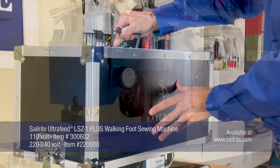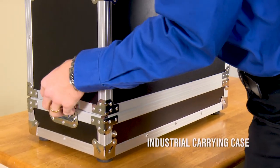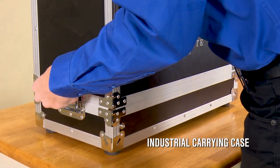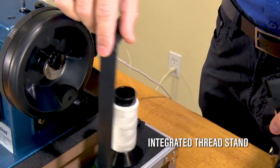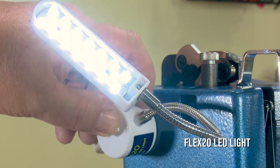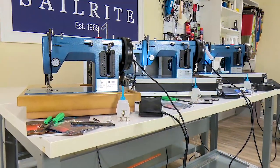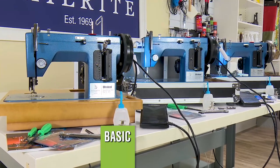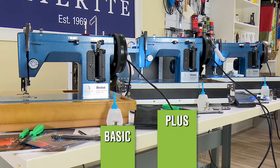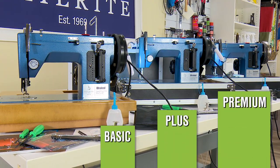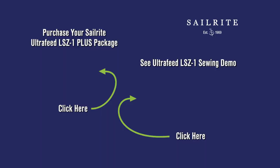The Plus Package featured in this video is one of the three available packages for the LSZ1 model. It is our mid-range level package which includes some great accessories. Want more accessories for your Ultrafeed LSZ1? See the Premium Package. It's loaded with all our favorite accessories to make sewing even easier and more fun.